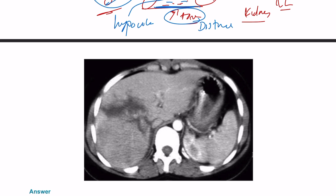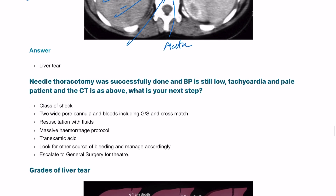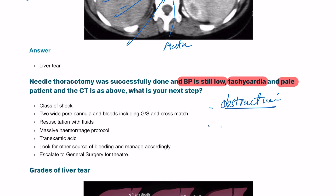Looking at this CT scan at the lumbar level, you can see the aorta and what is likely L1. The liver has adequate density on one side, but there is a darker, blackish area — this looks like a liver laceration. The patient had needle thoracocentesis performed but blood pressure remains low, the patient is tachycardic and pale. So this patient has a combination of obstructive shock from tension pneumothorax and now hypovolemic — hemorrhagic — shock from the liver laceration.